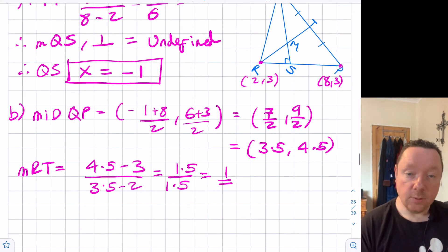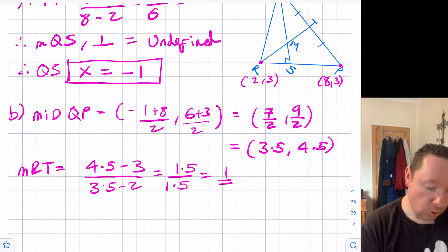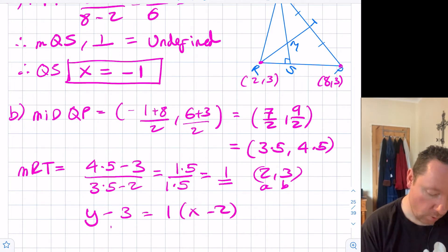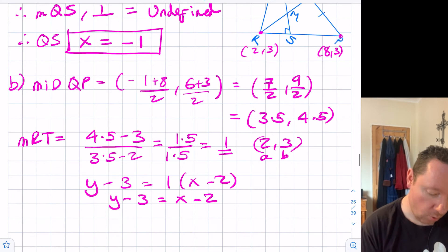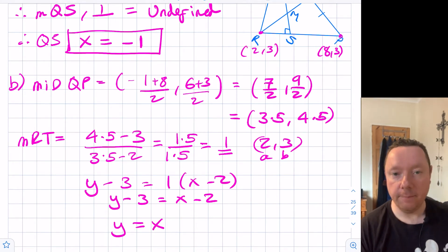We can use y minus b equals mx minus a. Using the points 2 and 3, y minus 3 equals 1 times x minus 2. So y minus 3 equals x minus 2, or y equals x plus 1.